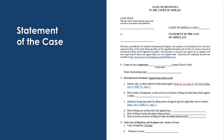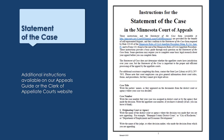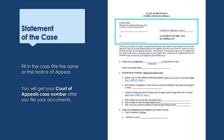The Statement of the Case is the longest document you will need to start your appeal. There are detailed instructions for filling out this form, available on the court's website or the State Law Library's appeals guide. You will want to refer to these instructions as you write your statement. Fill in the caption just like you did on the Notice of Appeal. You will not get a Court of Appeals case number until you file your documents, so you can leave that blank for now.